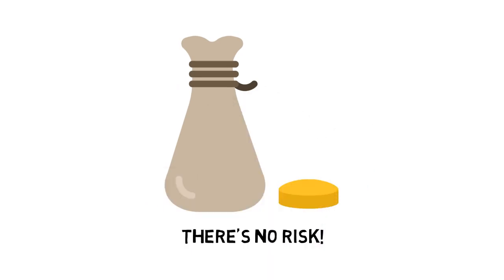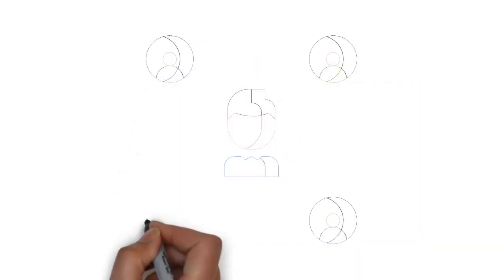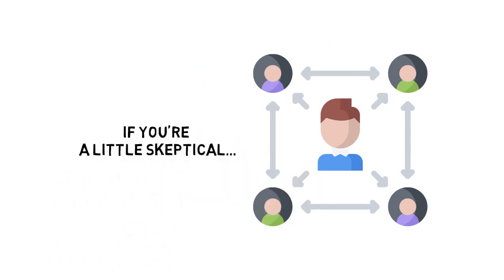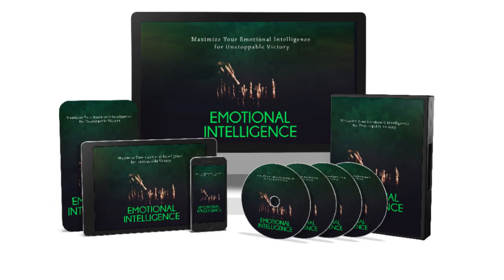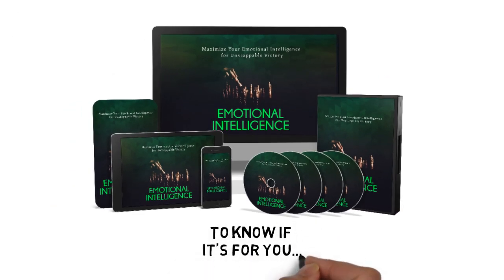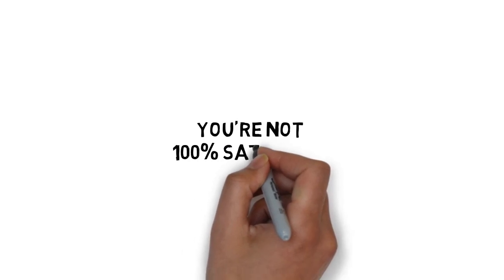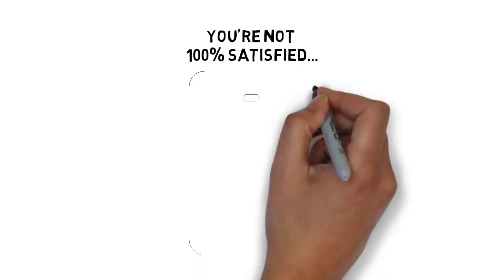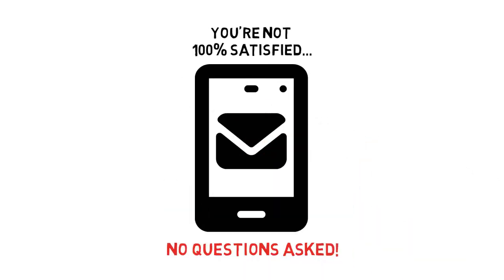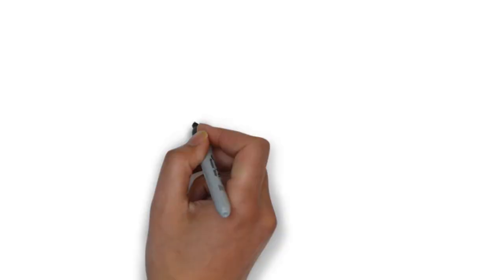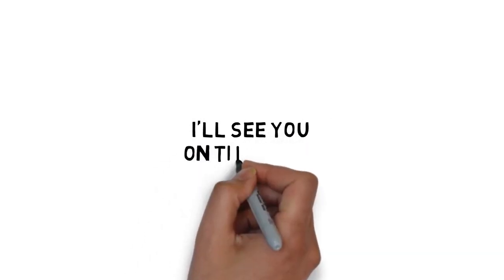Try this guide on my dime — there's no risk. There are a lot of people that claim to offer a solution on how to manage your emotions better, so it's understandable if you're a little skeptical. That's why I'm going to give you a full 30 days to decide if this is for you. If for any reason or no reason at all you're not 100% satisfied with what's inside, simply send me an email and I'll refund every penny of your tiny investment — no questions asked. Click the button below now to get instant access. Thank you so much for taking the time to look at this extremely limited offer that has the potential to help you become a more persuasive person. I'll see you on the inside.